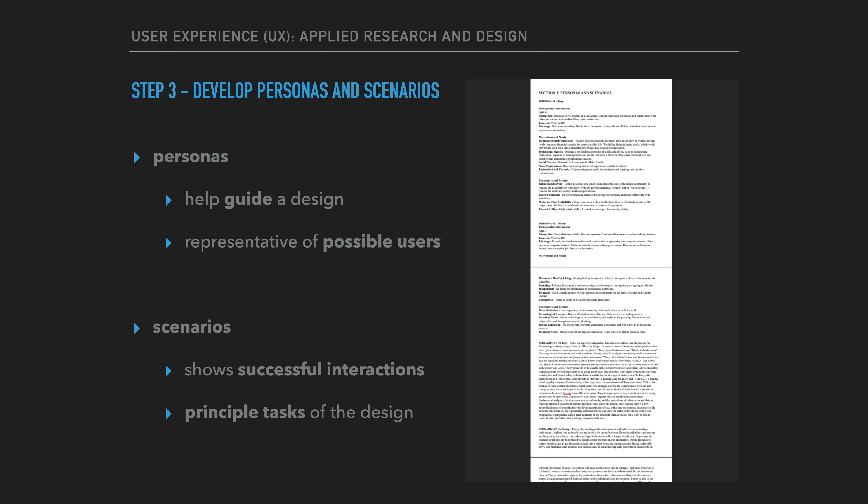Step three involves developing personas and scenarios. This step involves defining personas and scenarios. Personas can assist in guiding a design or defining a direction for design. They should be representative of possible users of the system and need to have sufficient detail and complexity, or they will not be useful.